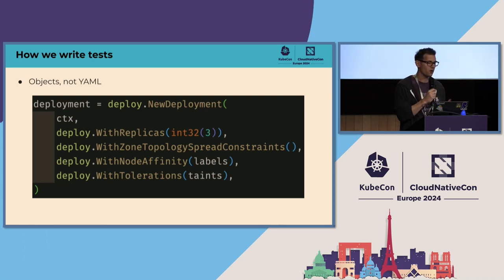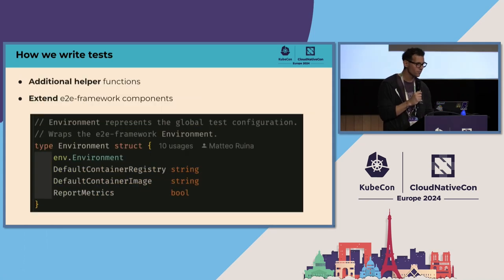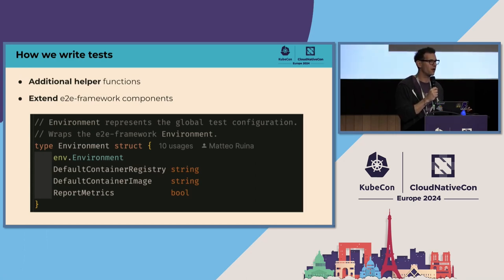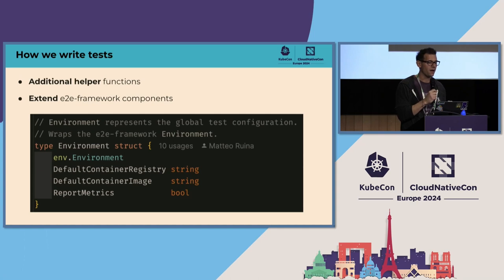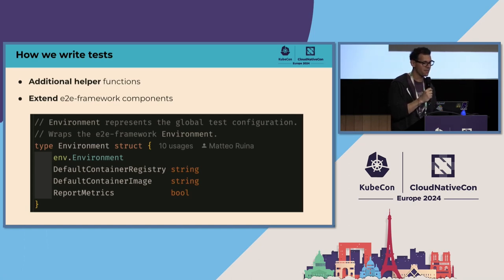We also created additional helper functions. Since we have a bunch of internal controllers, we need additional helpers to make sure our objects are ready. We extended the E2E framework easily — for example, we have a bunch of CLI flags to pass when running the environment, so we wrap the E2E environment inside our own. We do validation to make sure that when we start the test suite, tests for a specific cloud provider only run on that cloud provider, and we can do that by passing our own CLI flags.